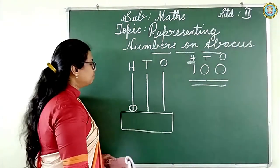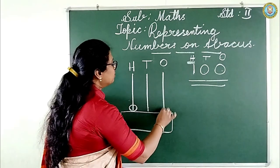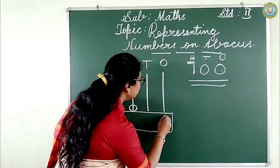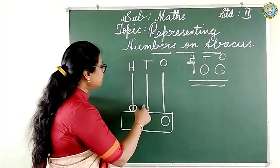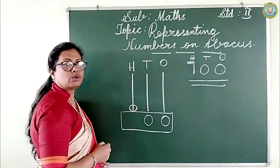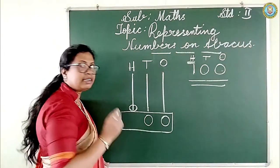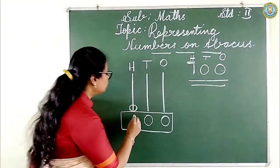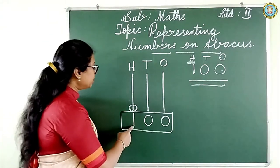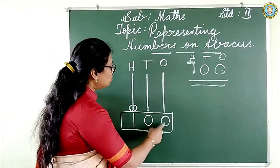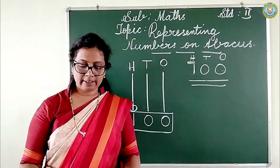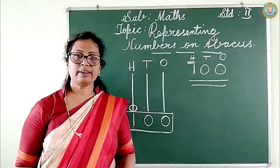So how to write it: for ones there is no bead, put zero. In tens also there is no bead, put zero. But in hundreds there is one bead, so put one. The number is one-zero-zero: one hundred.